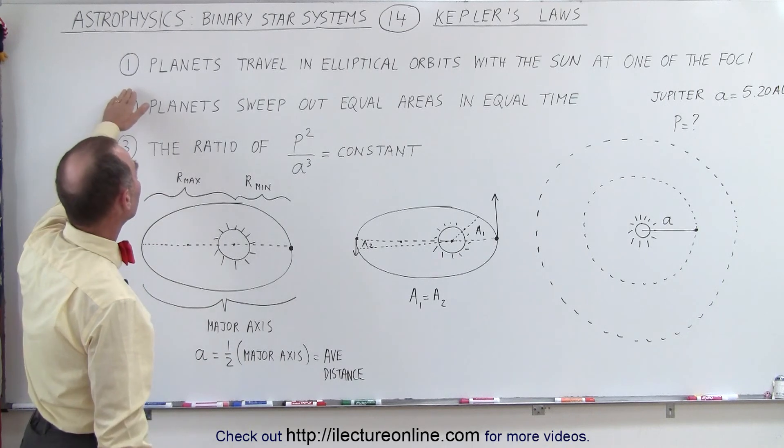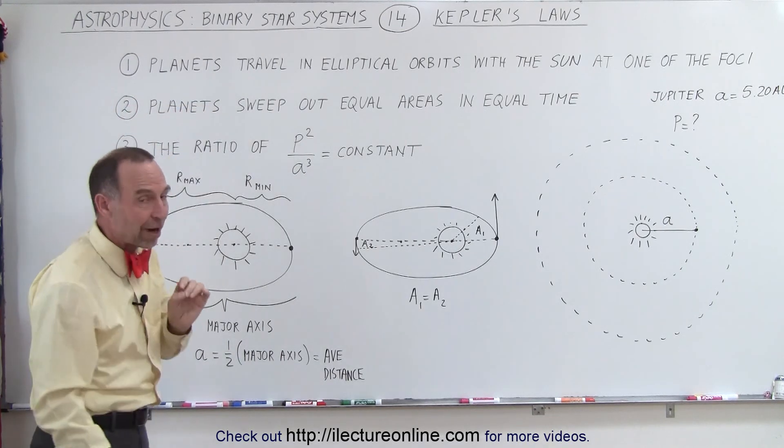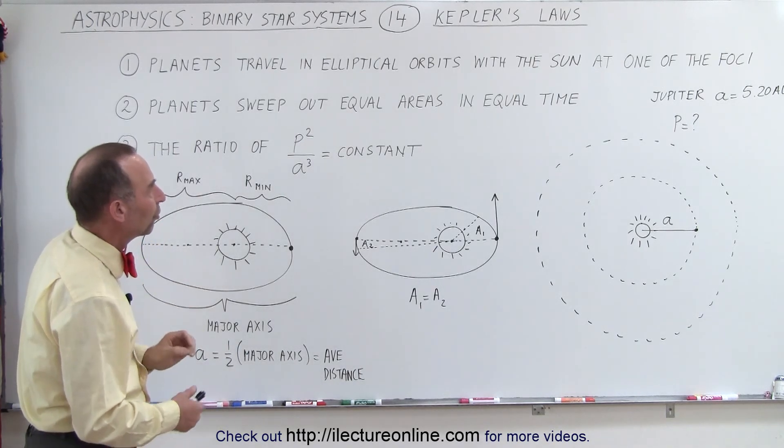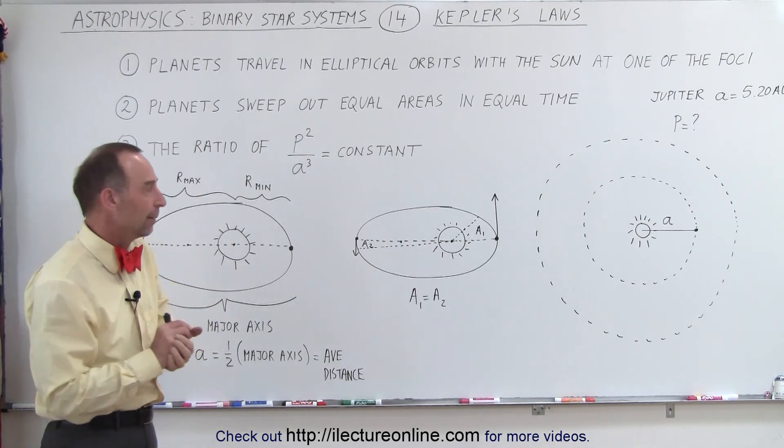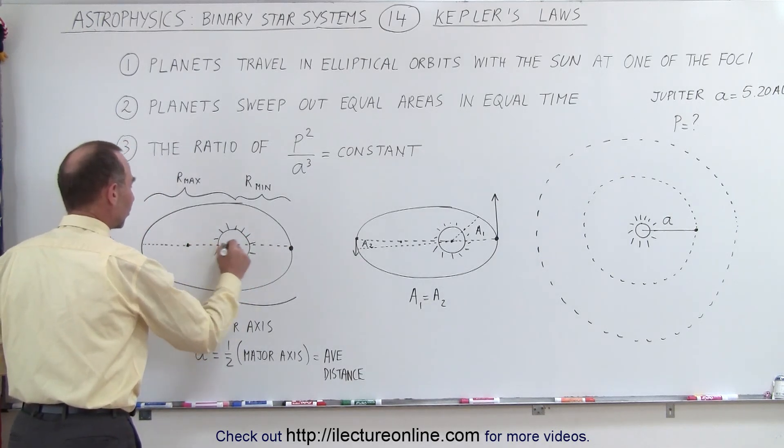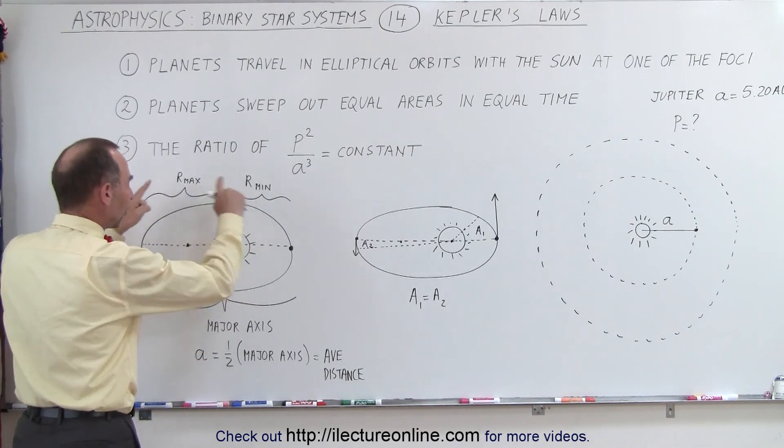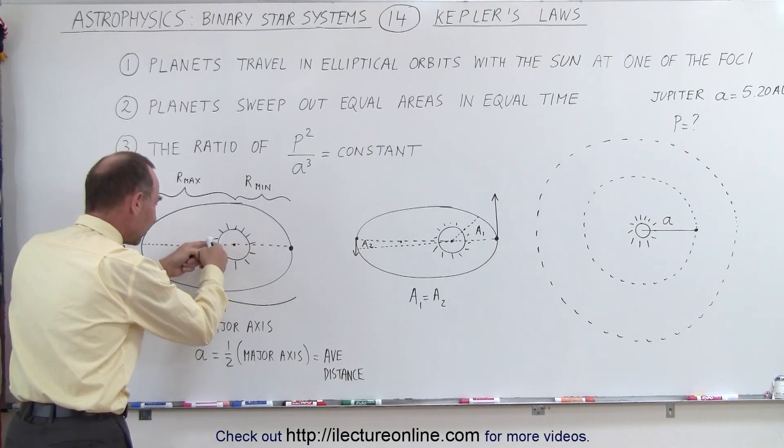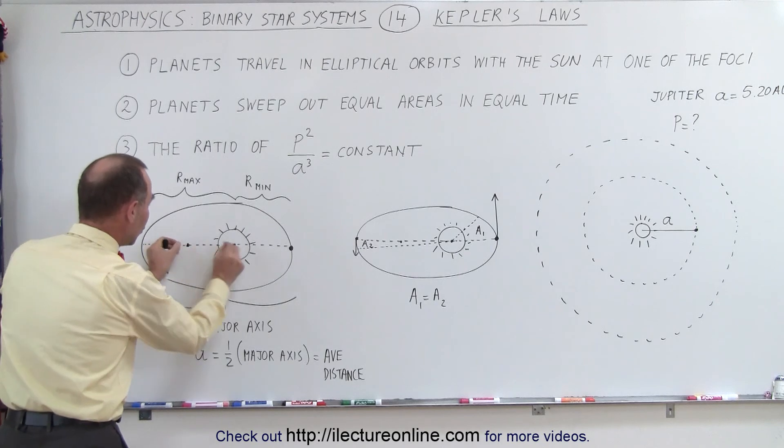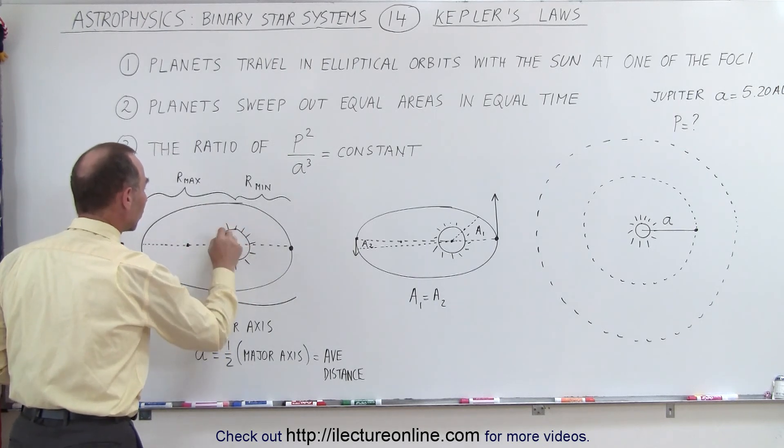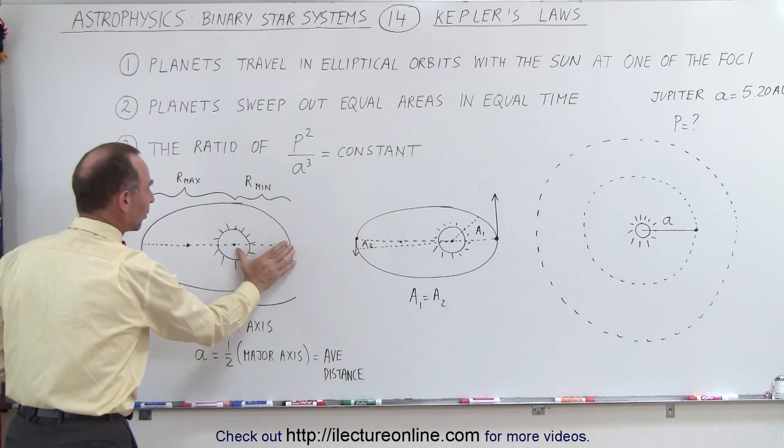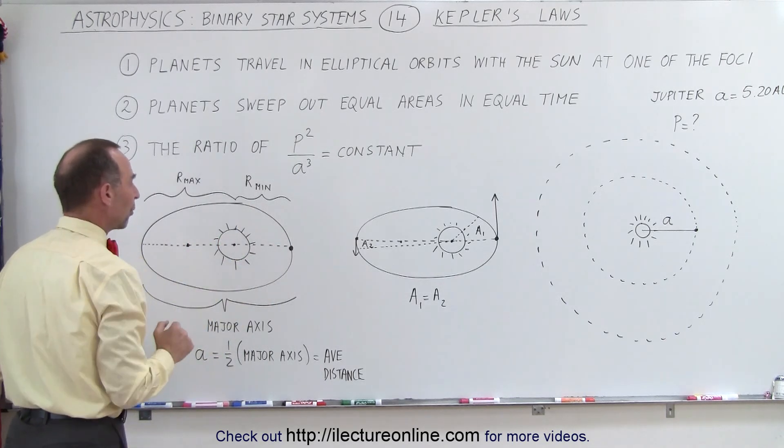The first one was that he realized that the planets did not travel in circles around the Sun, but actually in elliptical orbits with the Sun at one of the foci. So here's a neat little picture. An ellipse typically has two foci. Unless it's a complete circle, then the two foci come together and form a single point, the center of the circle. But for an ellipse, there are two foci. You place the Sun at one of them, and then the planets will then revolve around the Sun, sometimes being closer and sometimes being farther away.